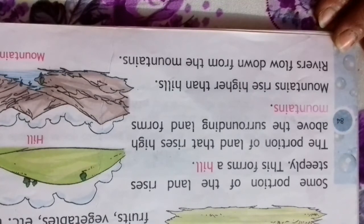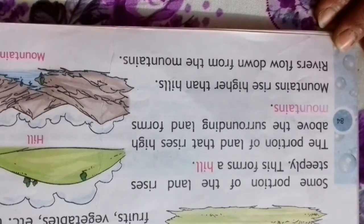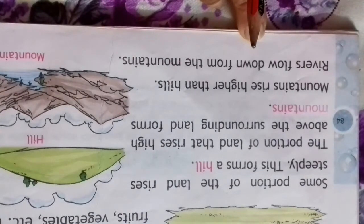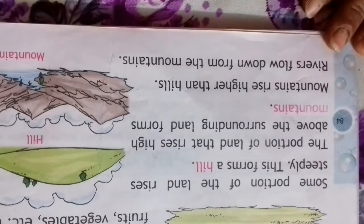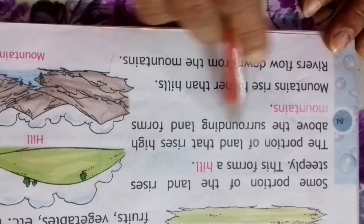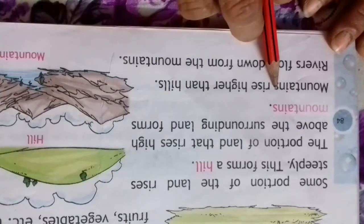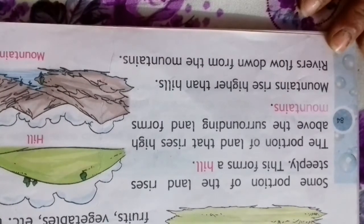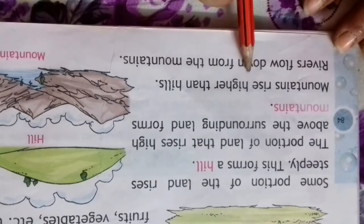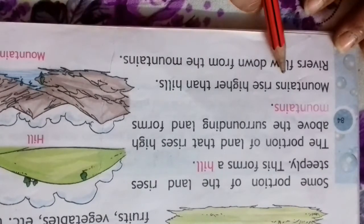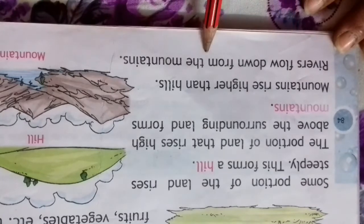The part of land that rises high above the surrounding land forms a mountain. Rivers flow down from mountains.